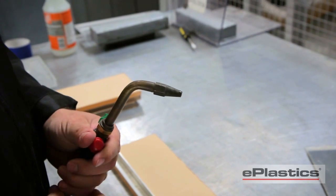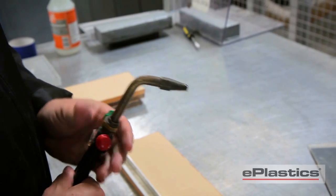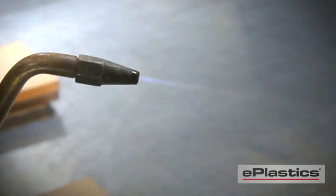At ePlastics, we use a hydrogen oxygen mix for flame polishing acrylic. In the absence of this ideal setup, a map gas torch can work.